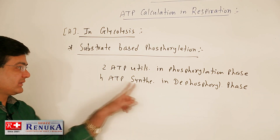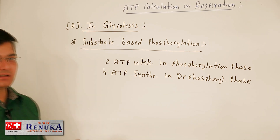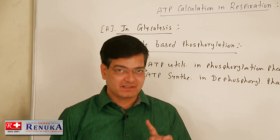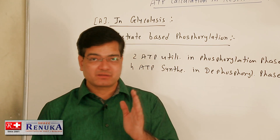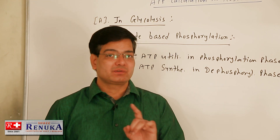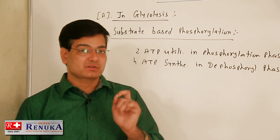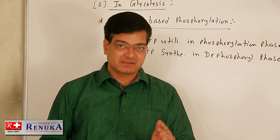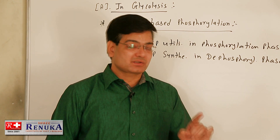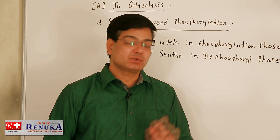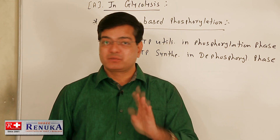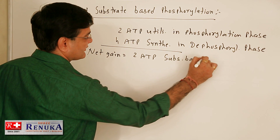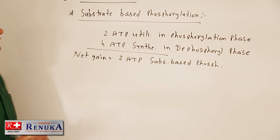In the dephosphorylation phase, 4 ATP are synthesized. When 1,3-diphosphoglyceric acid converts into 3-phosphoglyceric acid, 1 ATP is synthesized, and when phosphoenolpyruvic acid (PEP) converts into pyruvic acid, another ATP is synthesized. Since dephosphorylation occurs twice in glycolysis, 2 molecules of dPGA convert into 2 molecules of 3-PGA, and 2 molecules of PEP convert into 2 molecules of pyruvic acid — giving 4 ATP total. The net gain is 2 ATP by substrate-based phosphorylation during glycolysis.